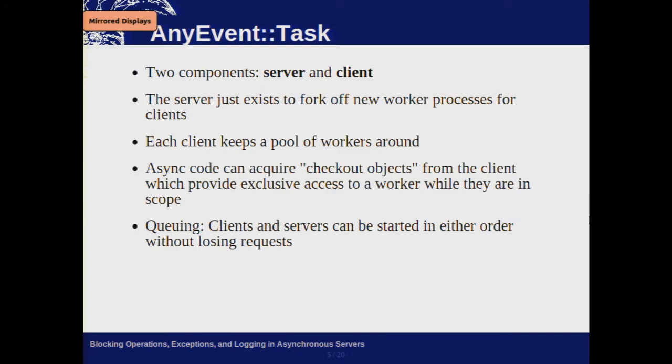You should never fork after threads are created, so the server and client being completely separate means the server can fork and then create threads if it wants. Each client keeps a pool of workers around and farms out tasks to them. The client acquires checkout objects — essentially like permits where you have exclusive access to a worker for a while. All requests, checkout acquiring, and everything is queued with timeouts, so you can start the server or client in either order and they can drop and come back.